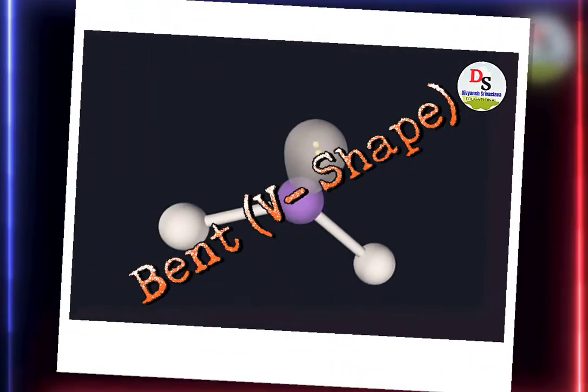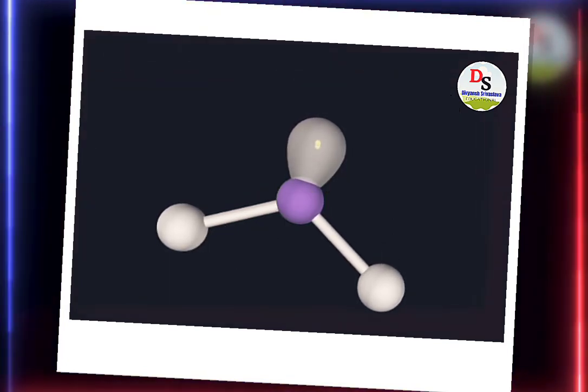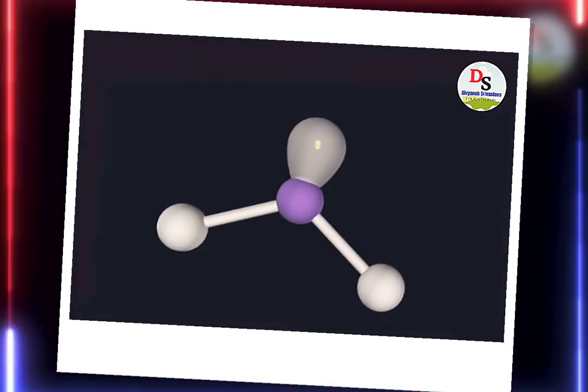It is the bent V-shaped structure of a molecule. It has 2 bond pairs and 1 lone pair.